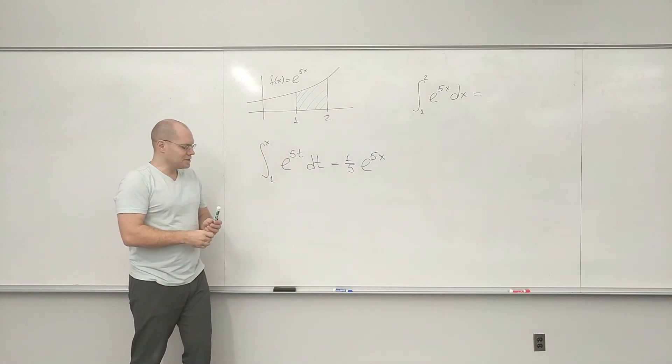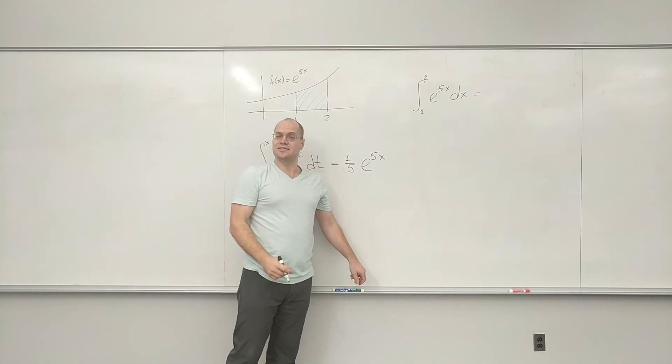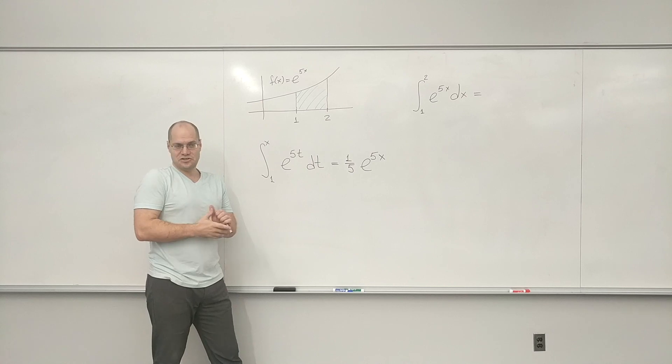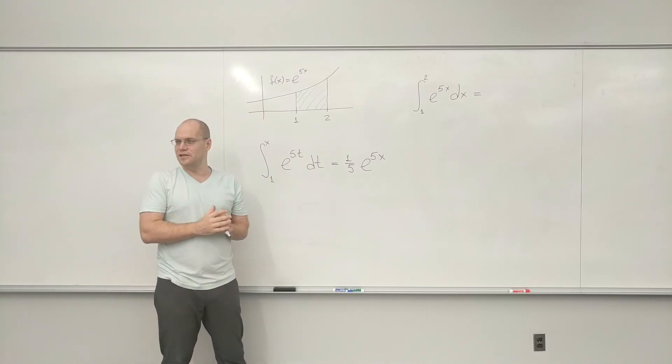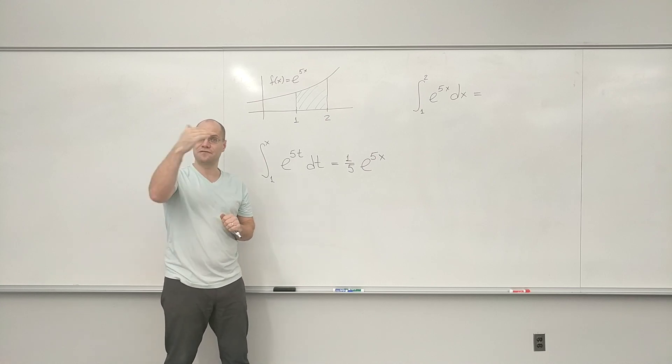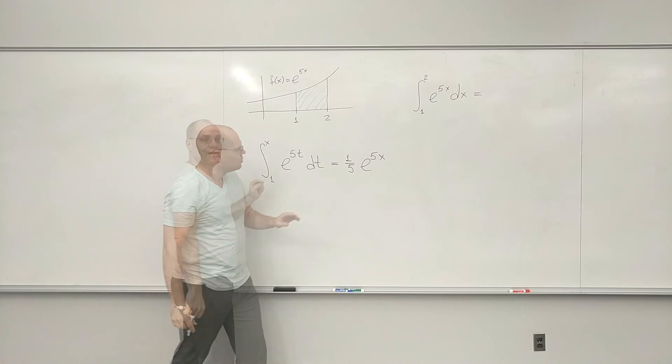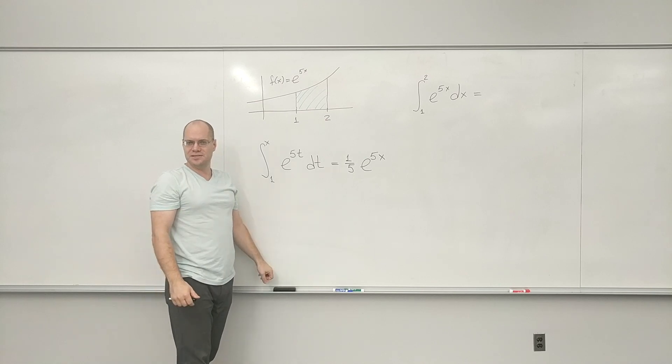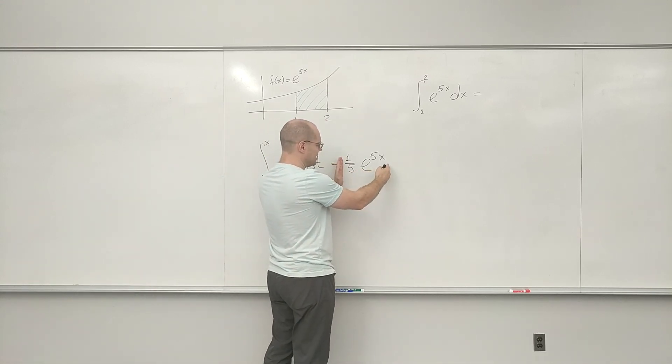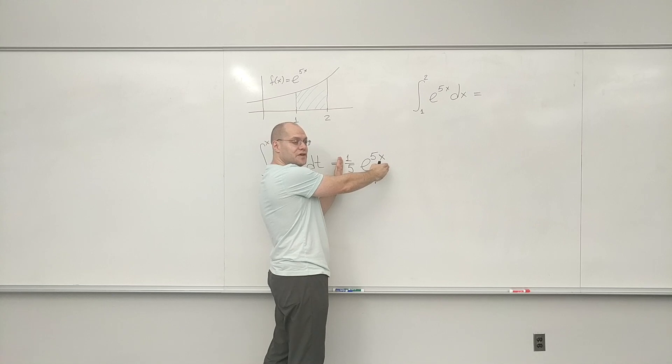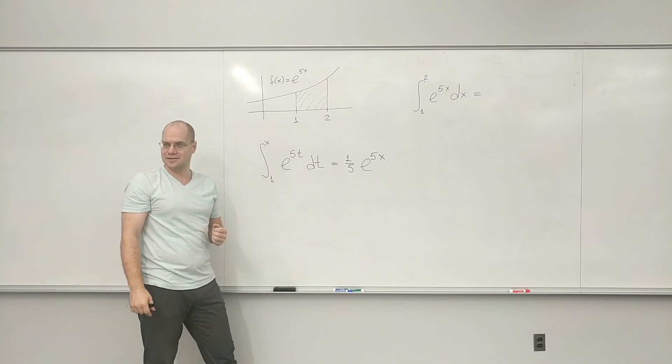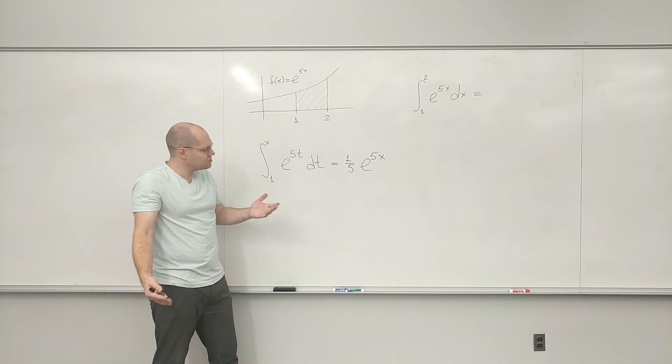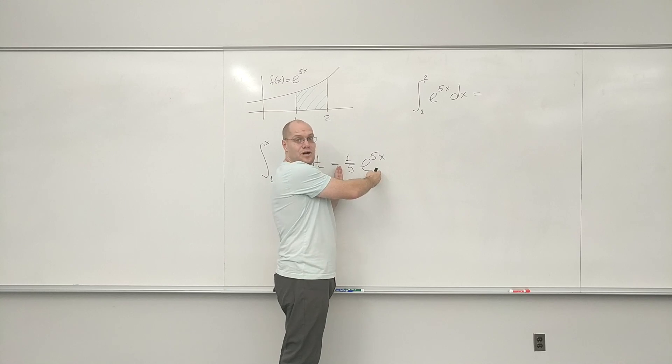So the constant that we will add here, which, by the way, is called the constant of integration. Integration means finding antiderivative, where you're doing the antiderivative. There's always that floating constant. Why? Because differentiation always kills it. Its value at 1 should be 0. And its value at 1, as it stands right now, is 1 fifth e to the 5. So I need to subtract that. Add minus that. Which is basically subtracting the value of this at 1.